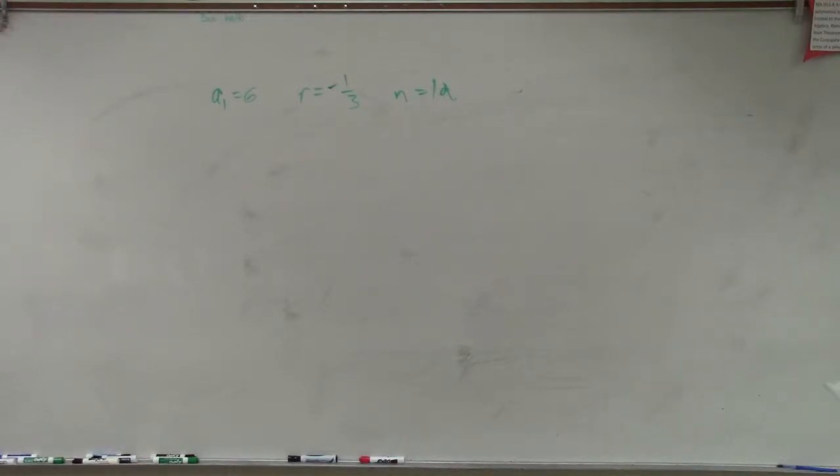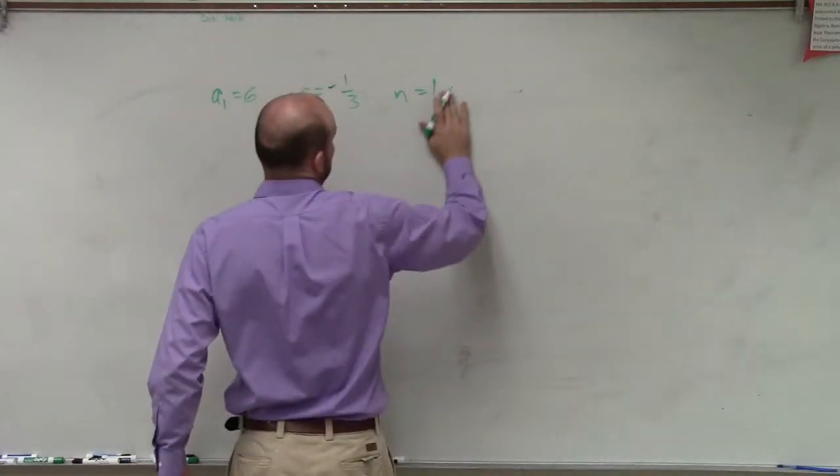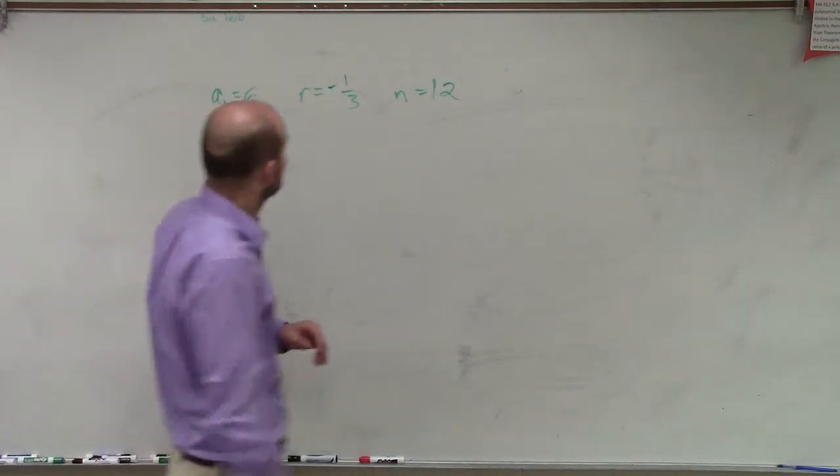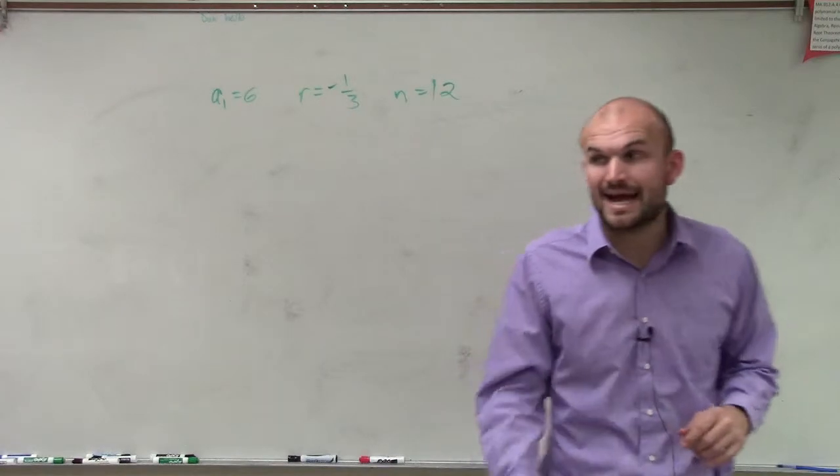OK. So this is a 12. So what we're going to do is a sub 1 equals 6, r equals negative 1 third, and n equals 12.